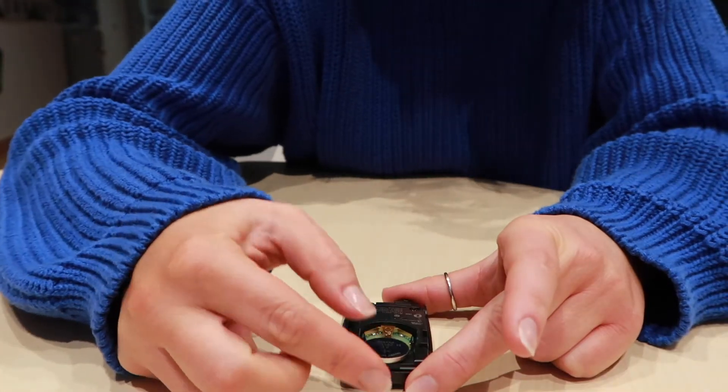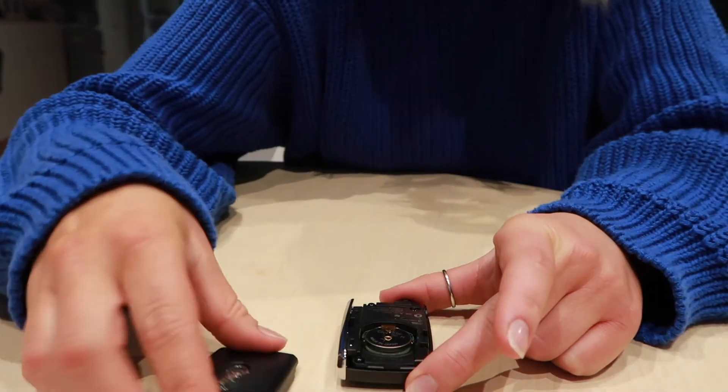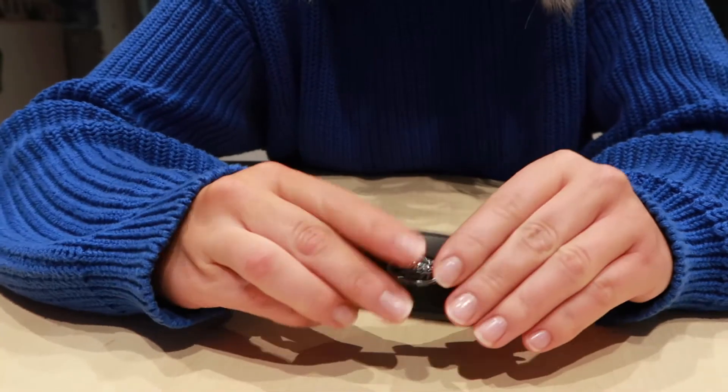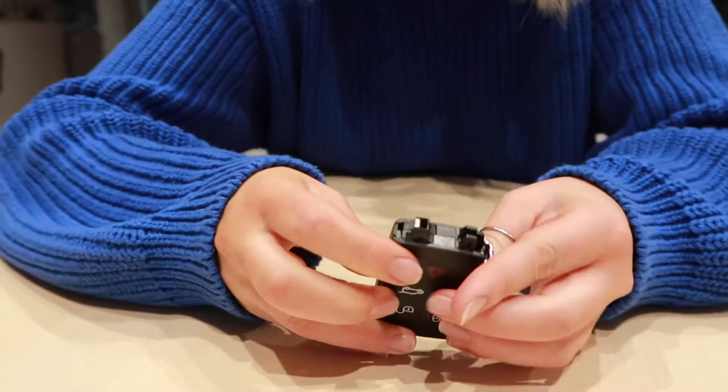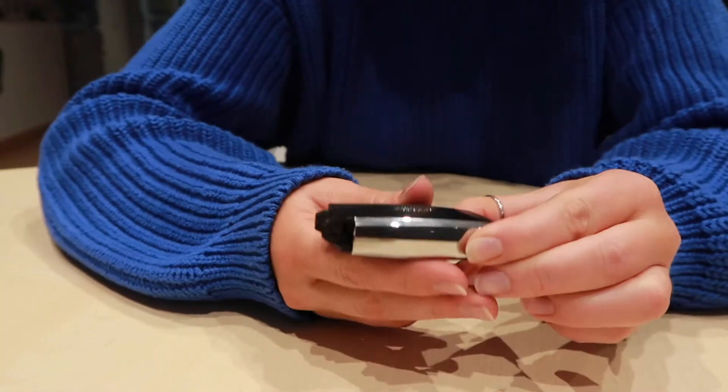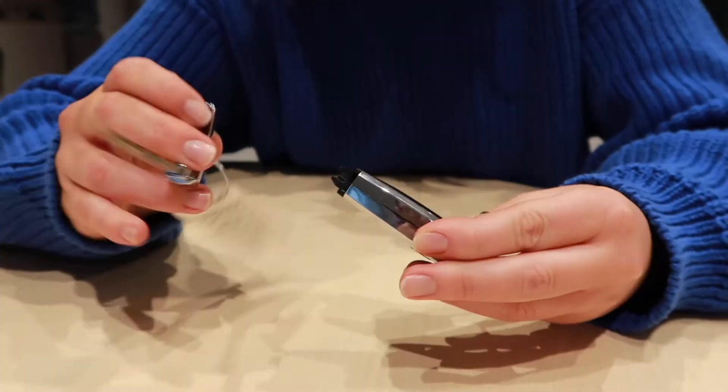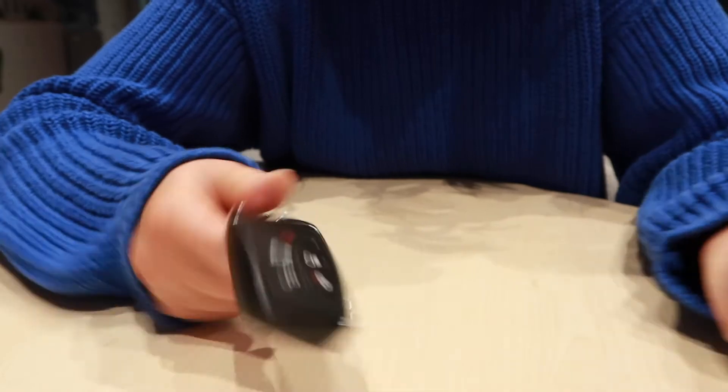Then you're going to slide the battery back under the little gold prong. Grab the top of the key fob again and this just actually clicks back into place. It's pretty simple to put on compared to taking off. So you're just going to snap it until it's flush again and then grab your hard key, put it back inside just like so and you're done.